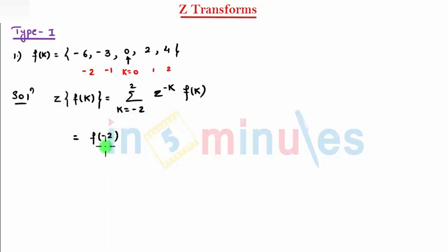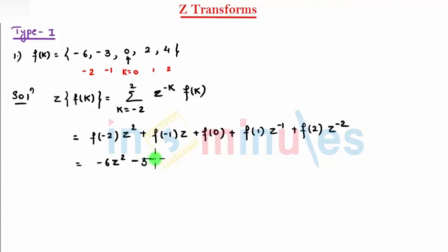f of minus 2, z raise to 2, plus f of minus 1, z, plus f of 0, f of 1, z raise to minus 1, f of 2, z raise to minus 2, which is equal to, so minus 6, z square, minus 3, z,